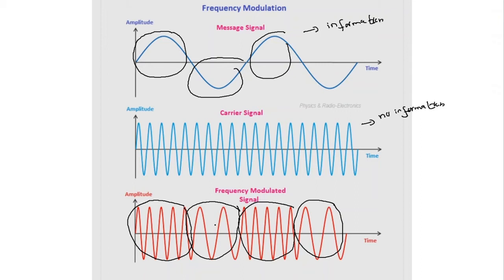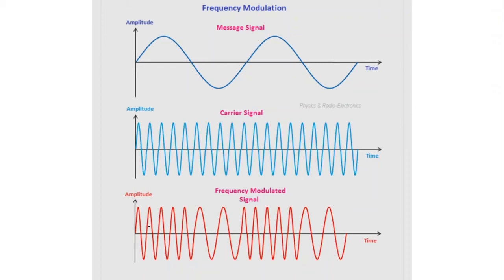When the spacing between the signal cycles is lower, the frequency is higher, because frequency is inversely related to time period. So the higher frequency corresponds to the positive amplitude of the message signal, and the lower frequency corresponds to the negative amplitude. In this way we are varying the frequency of the carrier signal in accordance with the amplitude of the message signal.